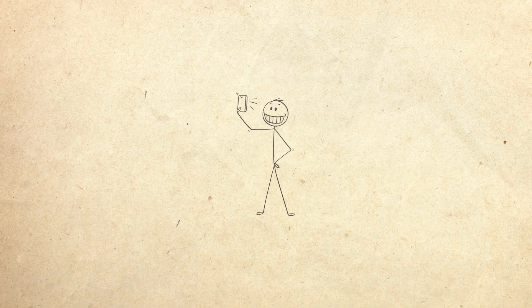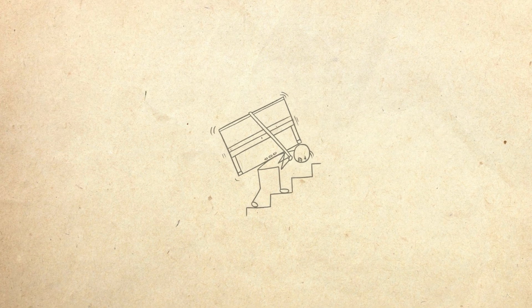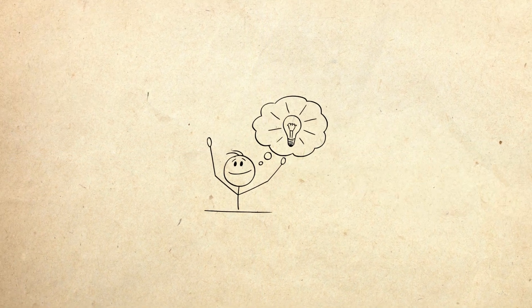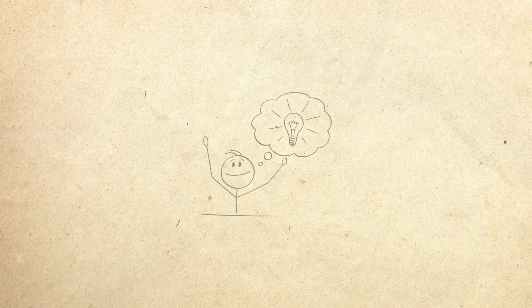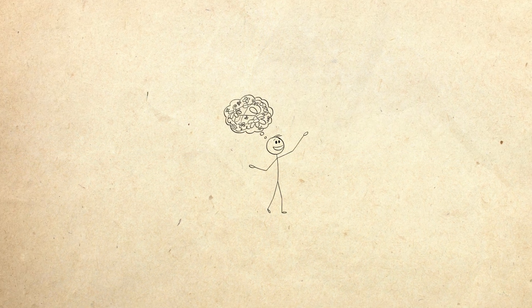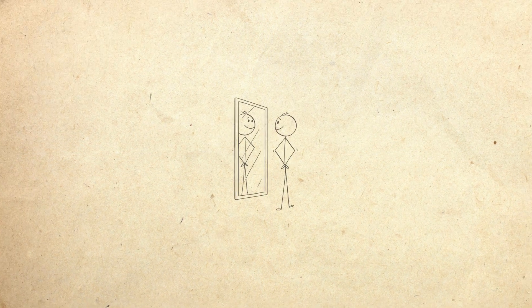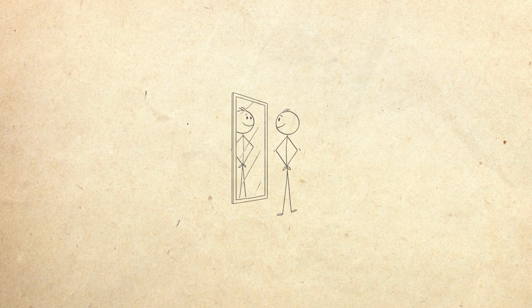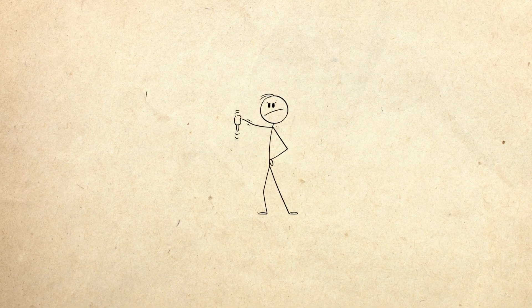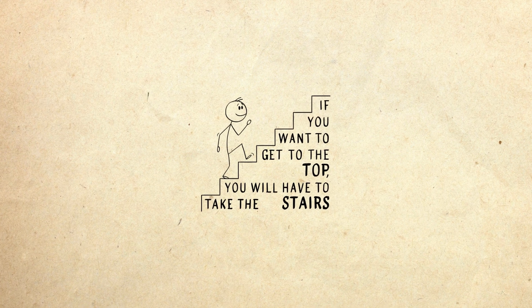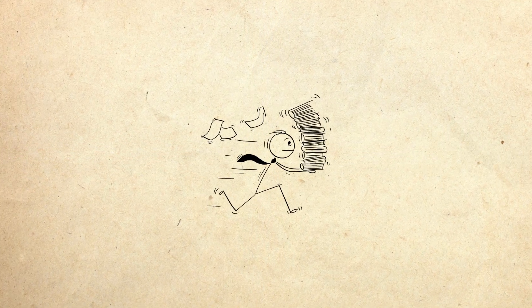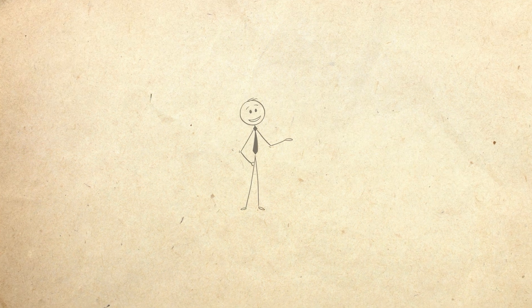Rule 3: Earn your peaks. The best dopamine comes from effort, not consumption. Working hard, then resting. Training, then recovering. These create long-lasting neurochemical elevation, not empty spikes. Rule 4: Expect the dip. After something amazing, prepare for the fall. Don't fear it. Observe it. Let your system rebalance without grabbing another hit.